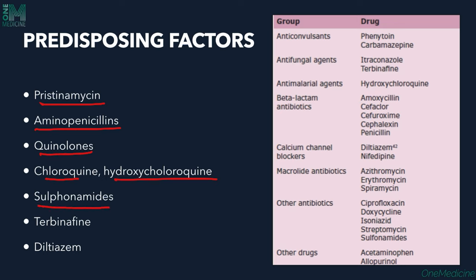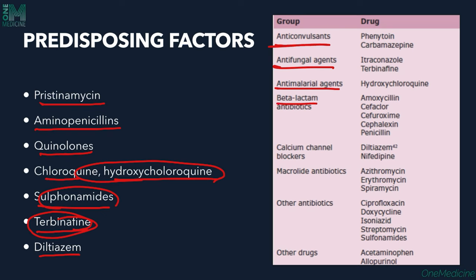Key predisposing drugs include pristinamycin, aminopenicillins, quinolones, chloroquine, hydroxychloroquine, sulfonamides, terbinafine, and diltiazem. As dermatologists, we frequently use chloroquine, hydroxychloroquine, antibiotics, terbinafine for fungal infections, and sulfonamide antibiotics — all of which can cause AGEP-like reactions. Other causative drugs include phenytoin, carbamazepine, itraconazole, amoxicillin, cefaclor, cefuroxime, penicillins, diltiazem, nifedipine, azithromycin, and erythromycin.